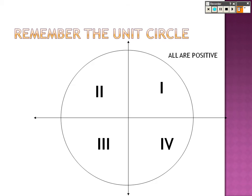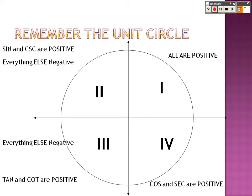Remember that all things are positive in quadrant I. Sine and cosecant are positive in quadrant II, everything else is negative. In quadrant III, tangent and cotangent are positive, but everything else is negative. And in quadrant IV, cosine and secant are positive, but everything else is negative.